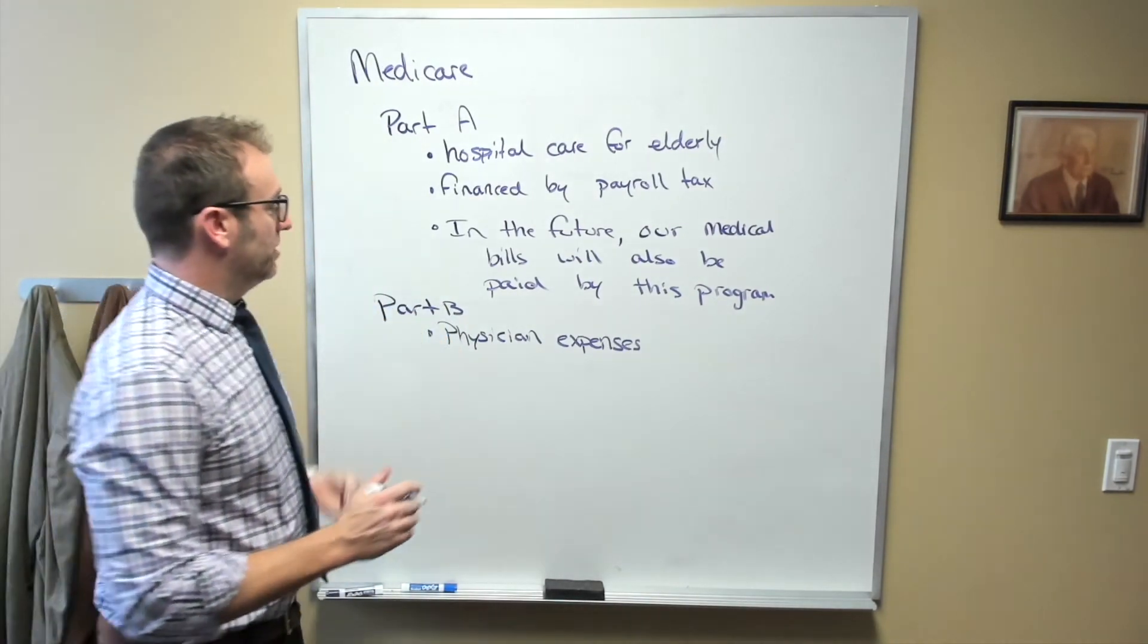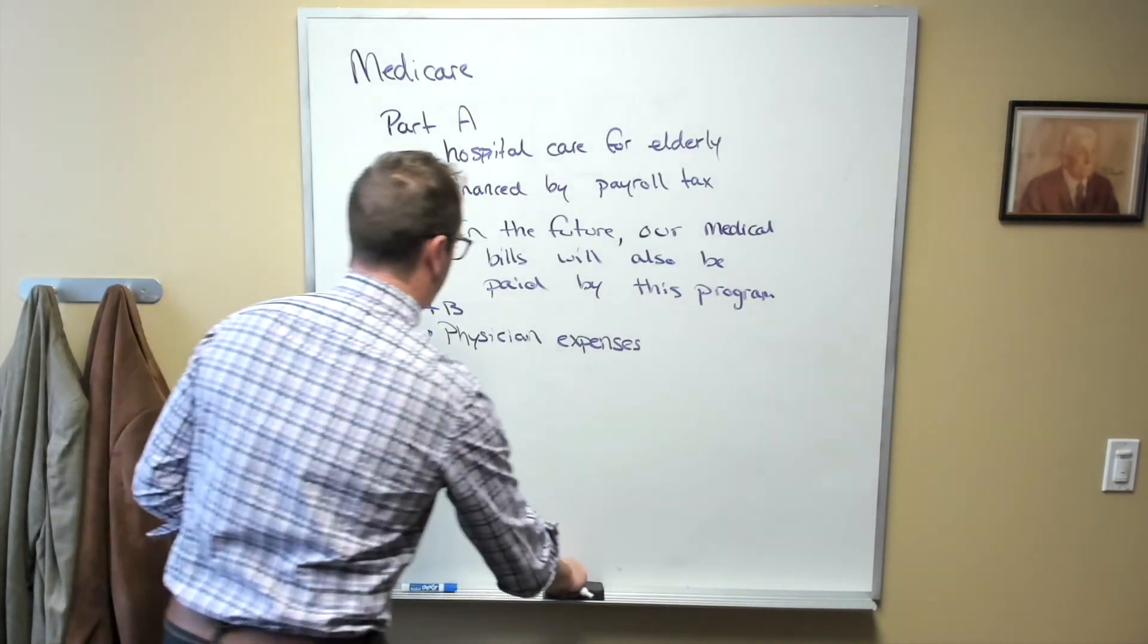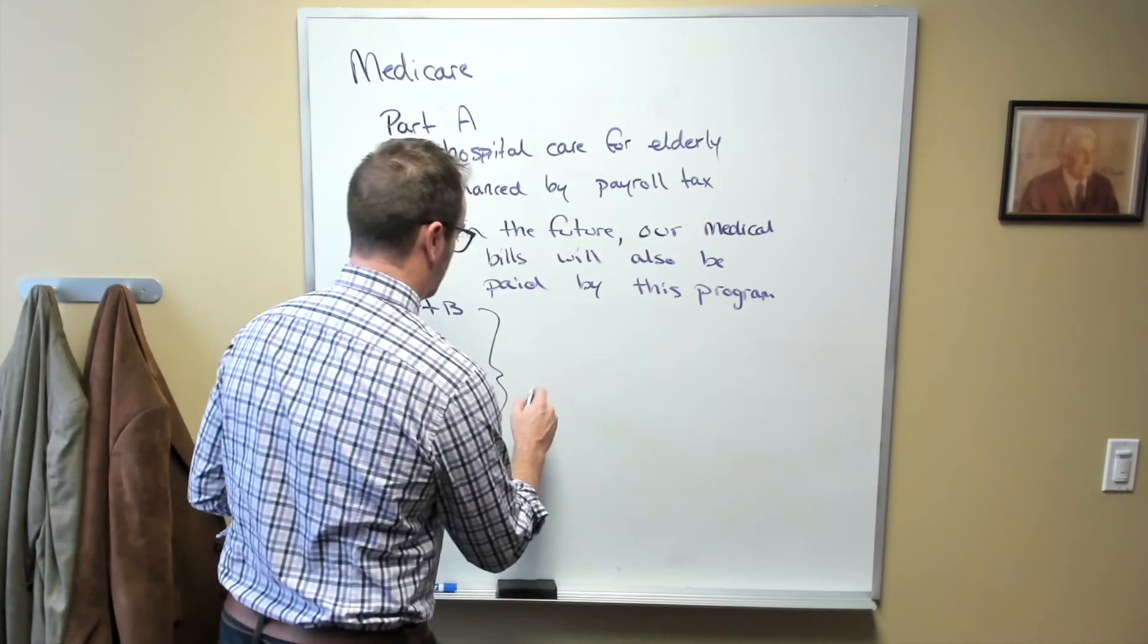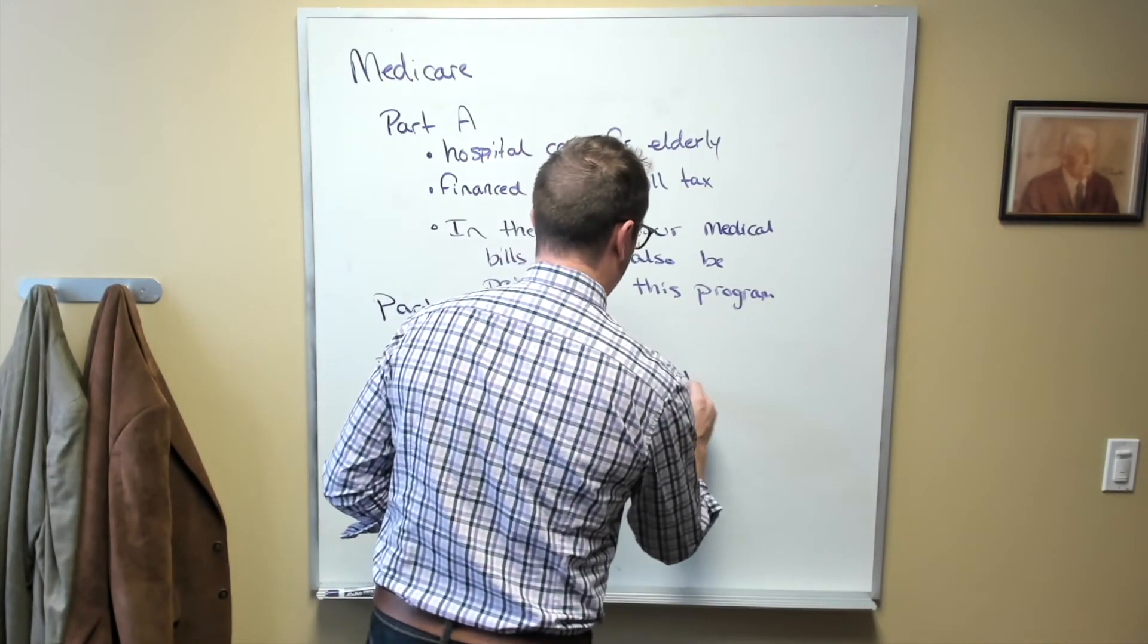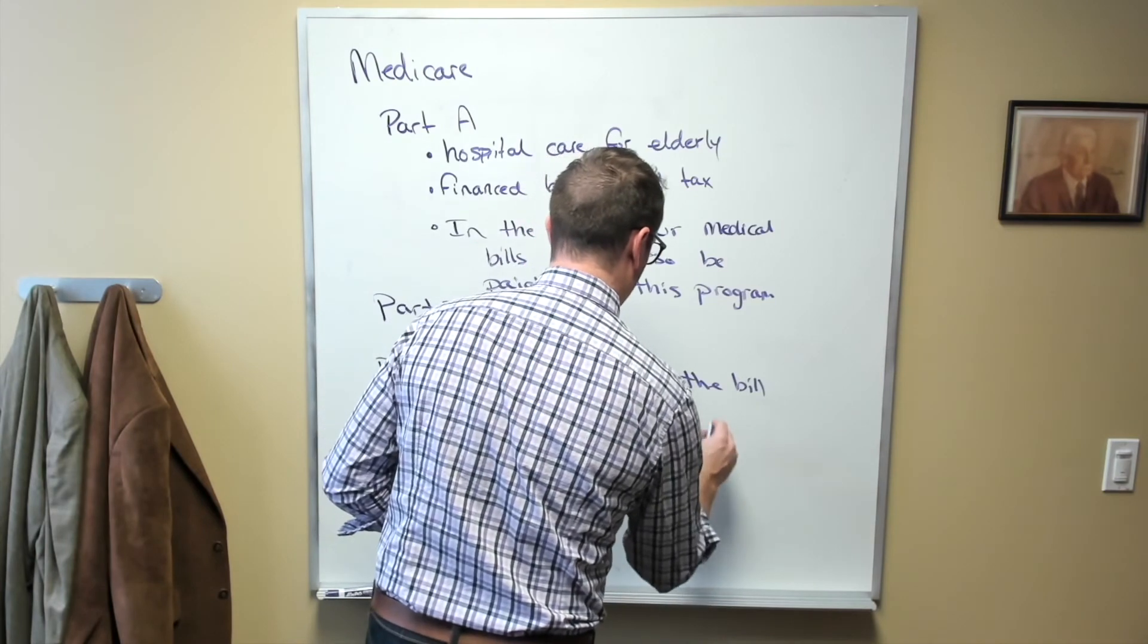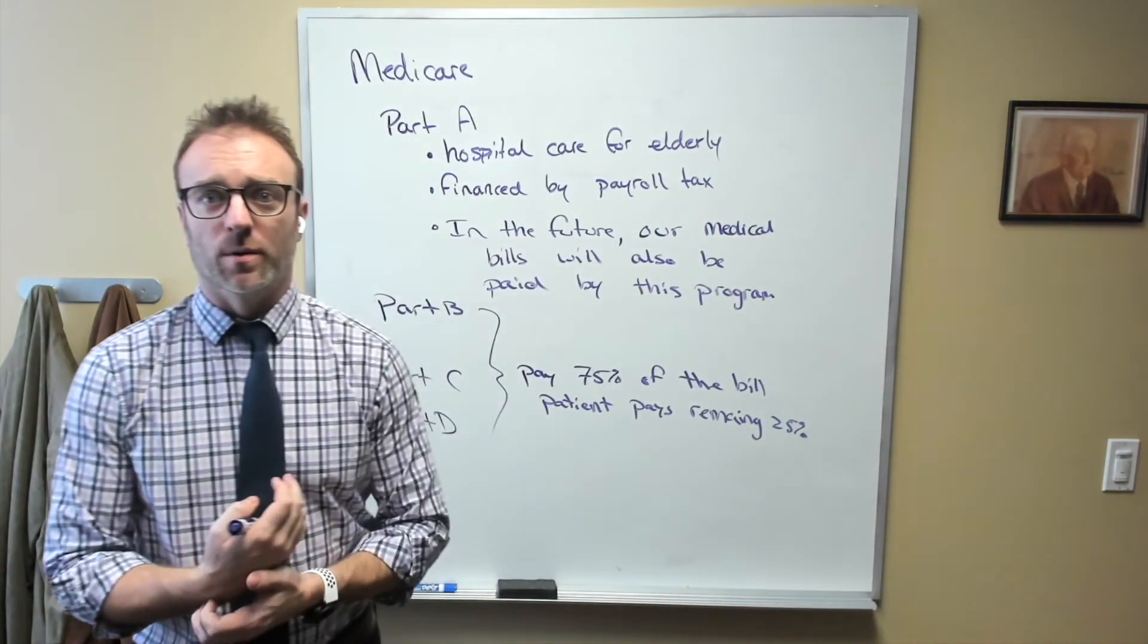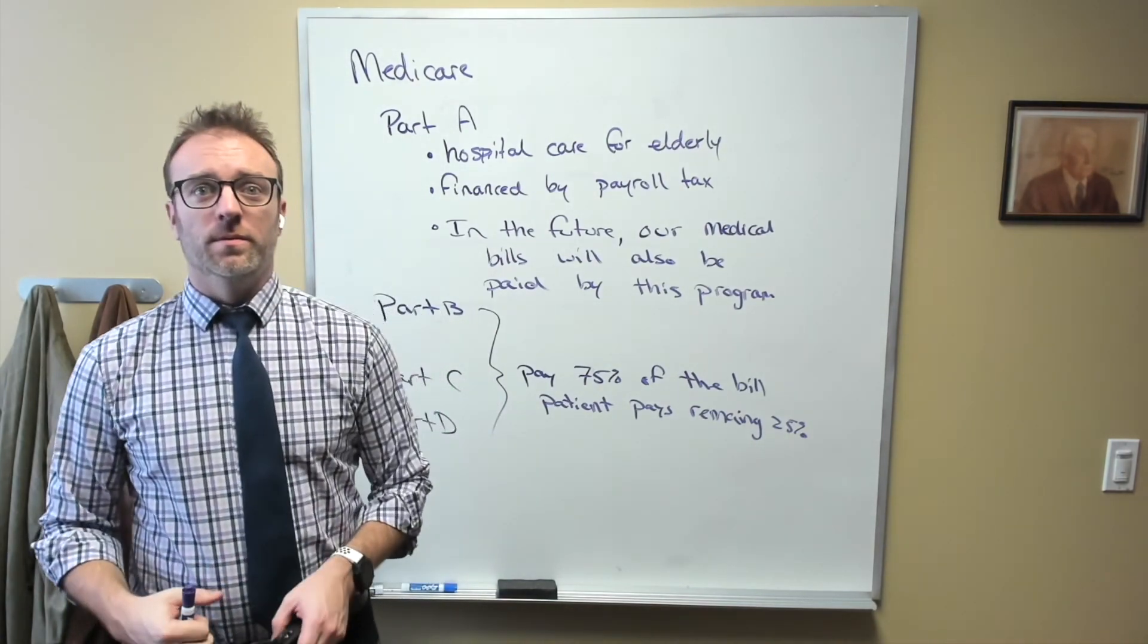And in general, Part C and Part D, these are all voluntary programs. You enter into them. And what happens is that Medicare Parts B, C and D will pay up to 75% of the bill, and the patient pays the remaining 25%. Now these are voluntary programs that older people are eligible for but do not have to join. There is typically an annual fee to join these programs. But overall, we tend to see pretty large participation in these.